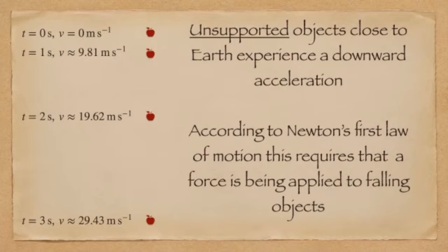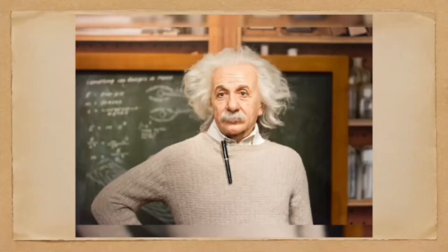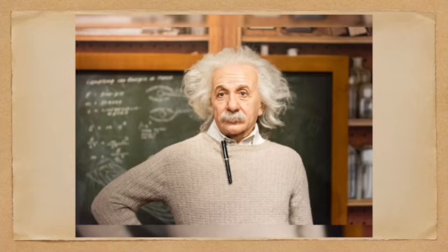This last example in particular seemed to suggest conclusively that there was a force in operation. If you hold an apple and release it, it will accelerate downward — it goes from being at rest to accelerating, which requires a force according to Newton's formulation. By the late 19th and early 20th century, when Einstein and his colleagues were coming onto the scene, it had become apparent that there were problems with the Newtonian approximation. While the Newtonian theory was an excellent approximation in most circumstances, there were some extreme conditions where it didn't perform so well.